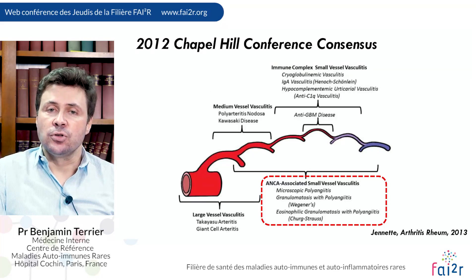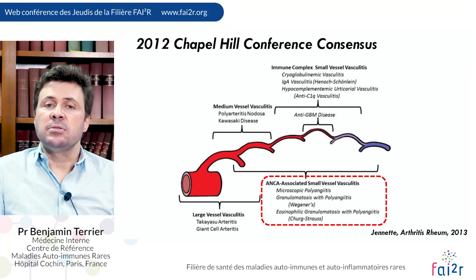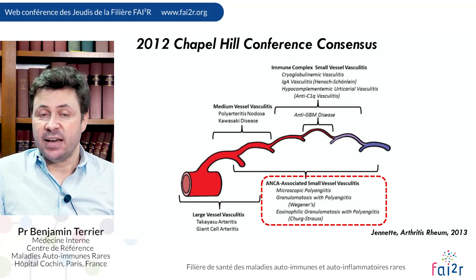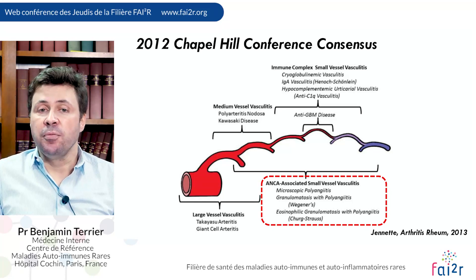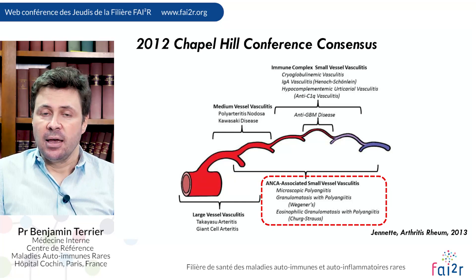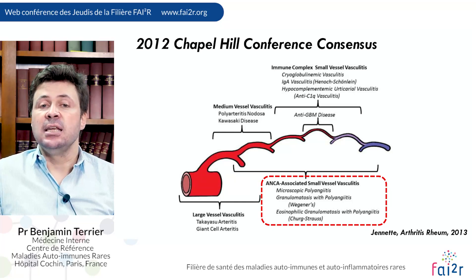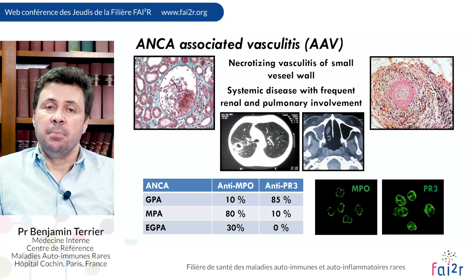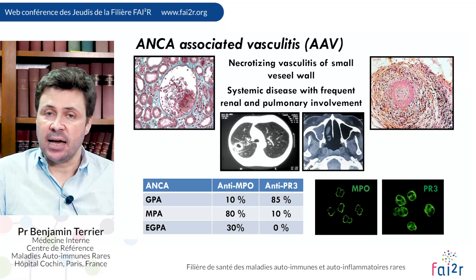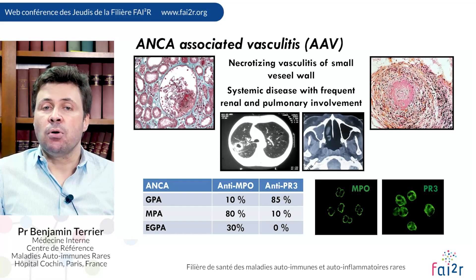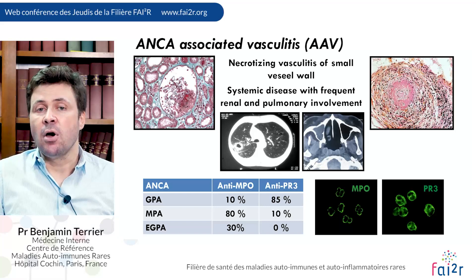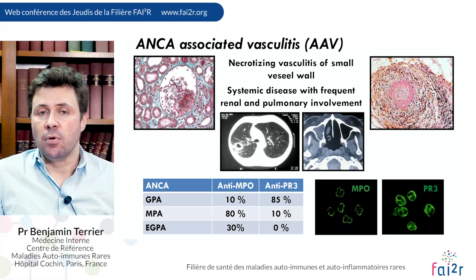As an introduction, we're going to talk about ANCA-associated vasculitis, which is a group of vasculitis involving the small vessels and associated with ANCA. These diseases belong to the group of systemic necrotizing vasculitis, and some of the major organs involved are the lung and/or the kidney, but all organs can be involved.